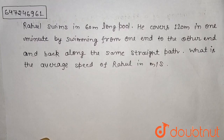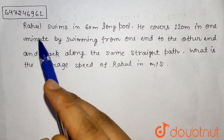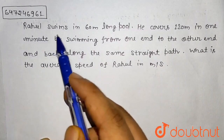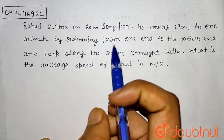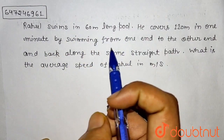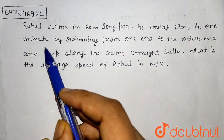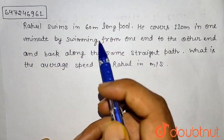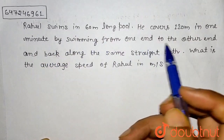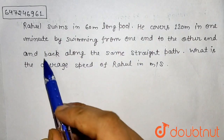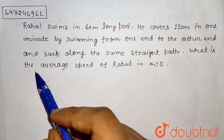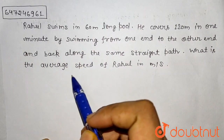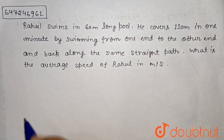Hello everyone. In this question, Rahul swims in a 60 meter long pool. He covers 120 meters in one minute by swimming from one end to the other end and back along the same straight path. What is the average speed of Rahul in meters per second?